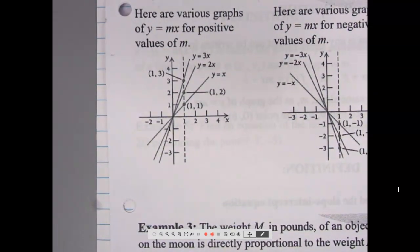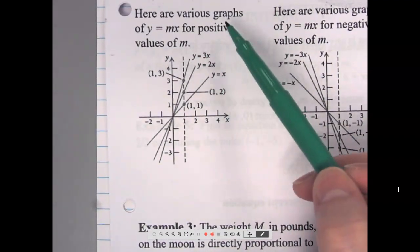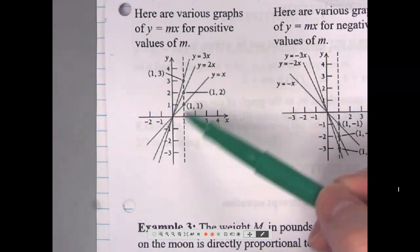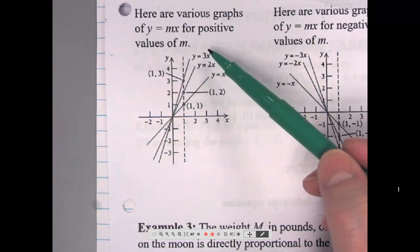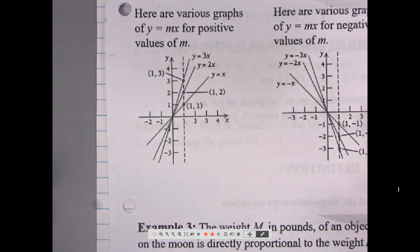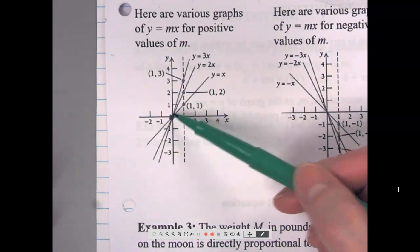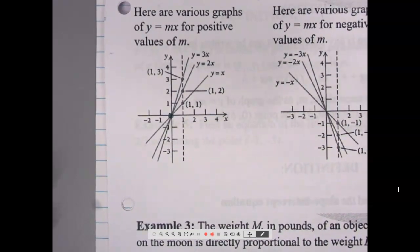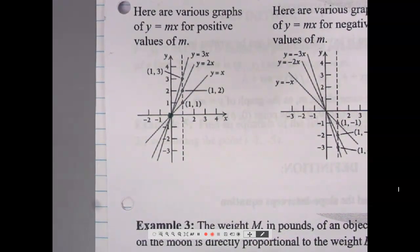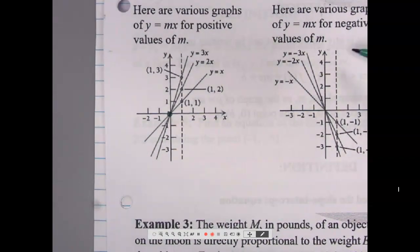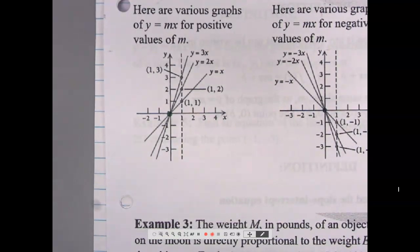Here are various graphs of y equals mx for positive values of m — lines like y equals 3x, 2x, 1x — they all go through the origin. And here are lines representing y equals mx for negative values of m, negative slopes — again, all crossing through the origin.